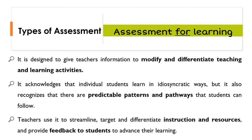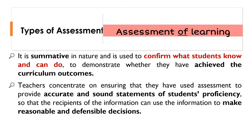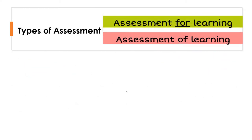Types of Assessments. They provide feedback to students to advance their learning. This feedback is essential. Assessment of learning is summative in nature and is used to confirm what students know and can do. It demonstrates whether they have achieved the curriculum outcomes or not. Teachers concentrate on ensuring accurate and sound statements of students' proficiency, so that recipients can make reasonable and defensible decisions. Types of assessments are assessment for learning and assessment of learning.